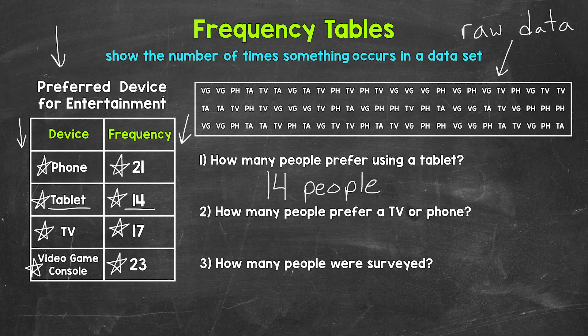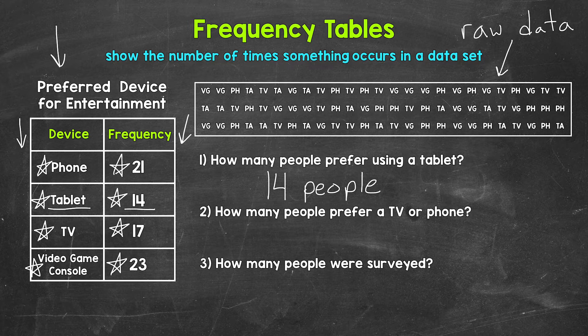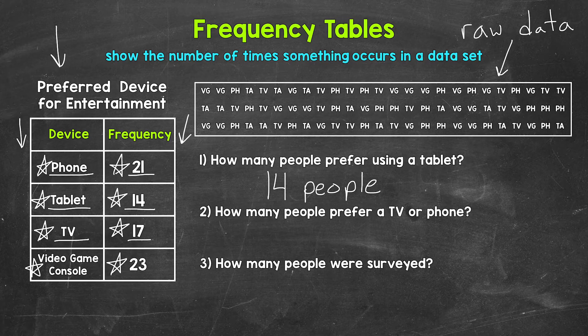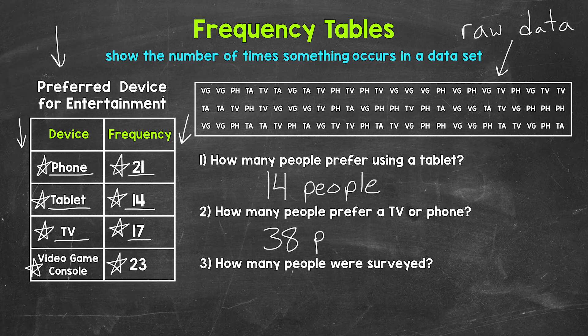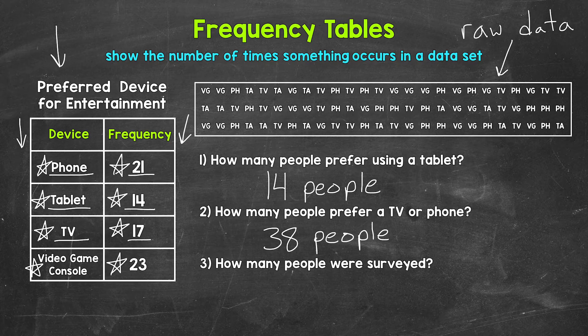Let's move on to number two, where we have, how many people prefer a TV or phone? So we need to look at TV and phone. So we have 17 for TV and 21 for phone. So 17 people plus 21 people gives us 38 people. So 38 people prefer a TV or a phone.